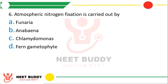Question 6: Atmospheric nitrogen fixation is carried out by option A Funaria, option B Anabaena, option C Chlamydomonas, or option D fern gametophyte. The correct answer is option B, Anabaena. Remember, Anabaena and Nostoc belong to eubacteria class and have the ability to fix atmospheric nitrogen due to the presence of heterocysts, which enable these organisms to fix atmospheric nitrogen.